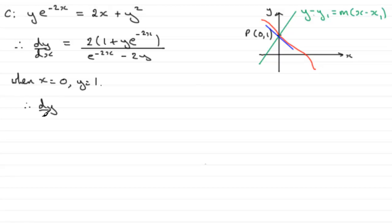So doing that, we therefore have dy by dx equals, well it'd be 2 then multiplied by 1 plus 1 times e to the power 0, all divided by e to the power 0 minus 2 times 1. And if we work this out, anything to the power 0 we know is 1, so that's going to be 2 times 2, which is 4.